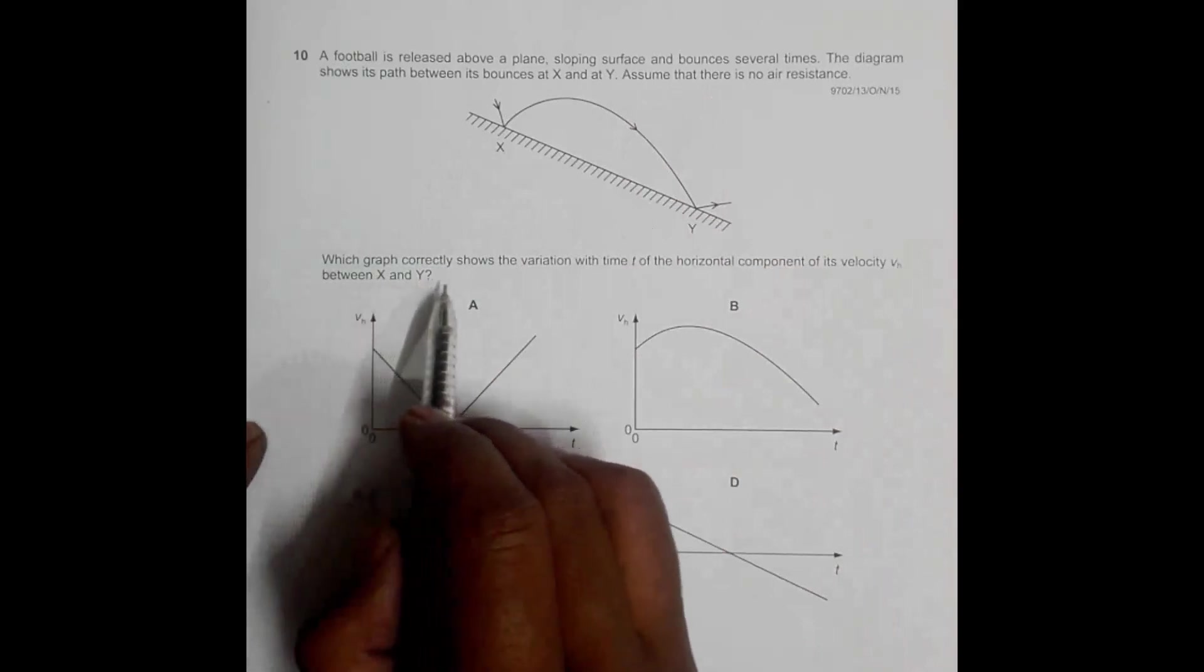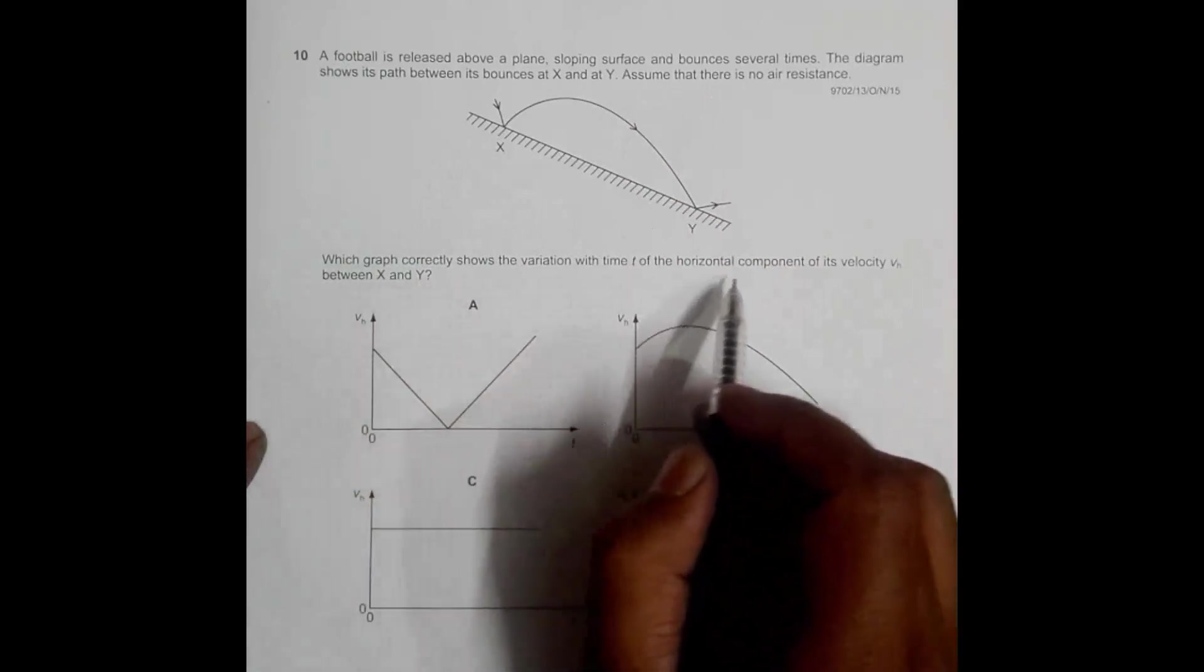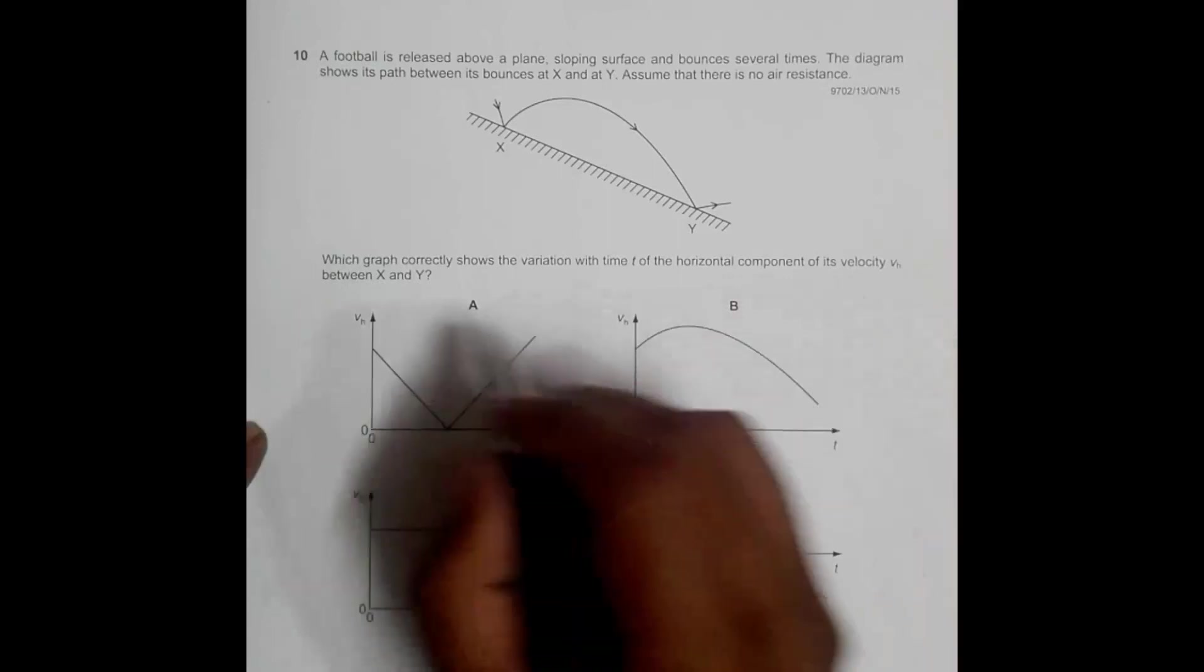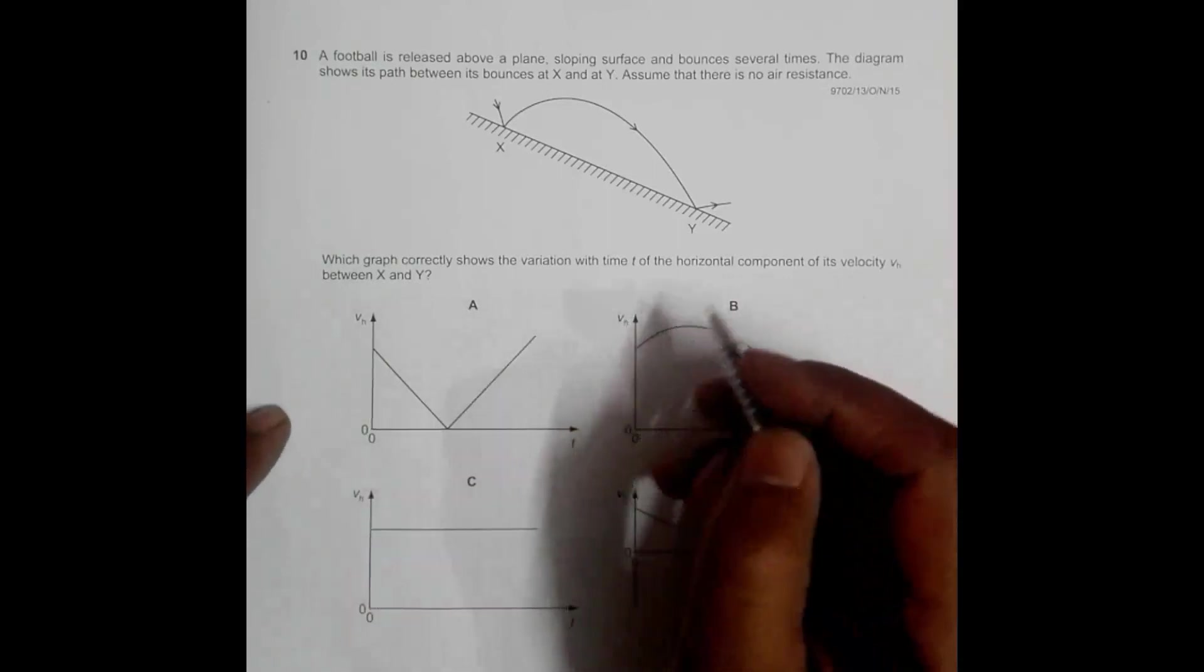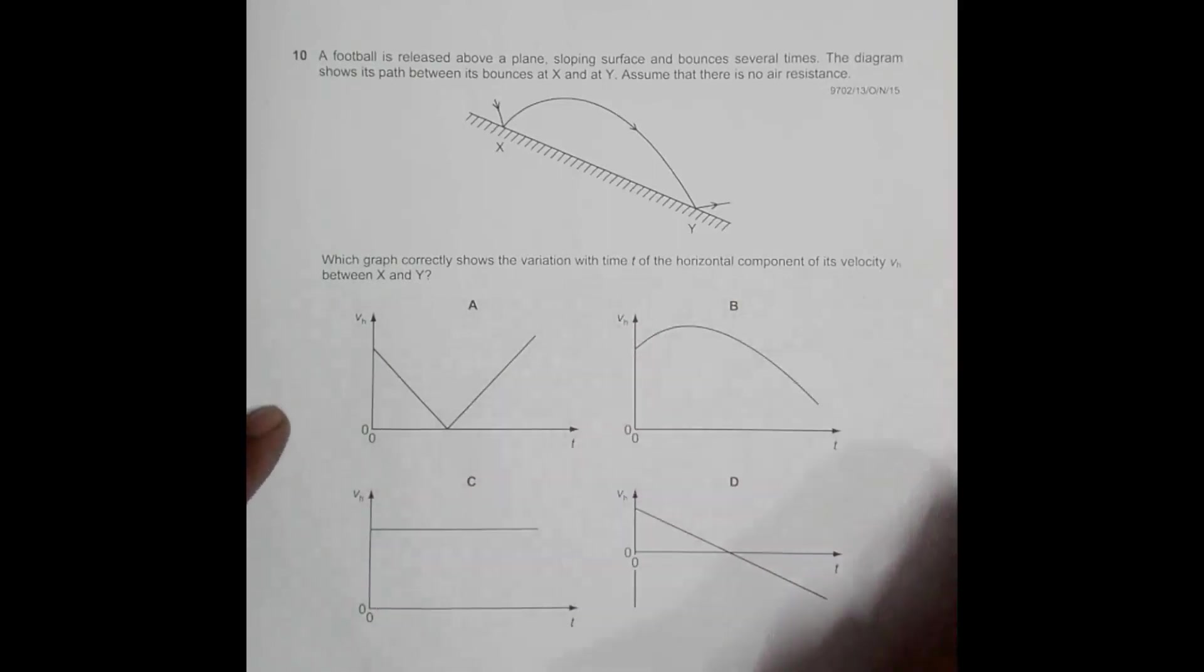Which graph correctly shows the variation with time t of the horizontal component of its velocity vh between x and y? So we have to show the graph of the horizontal velocity, or the horizontal component of velocity, with time.